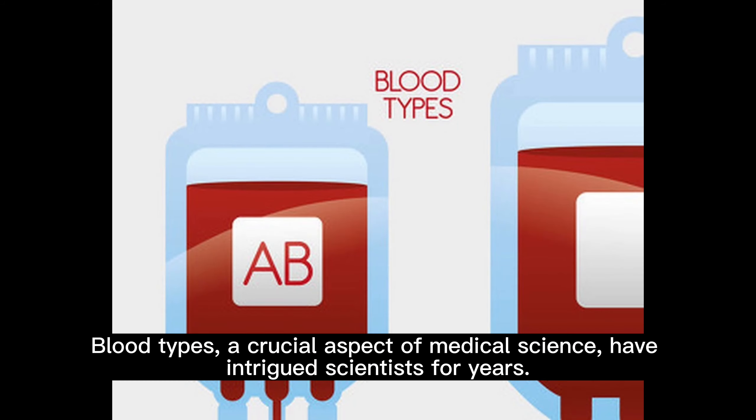Blood types, a crucial aspect of medical science, have intrigued scientists for years. But why do we have different blood types? Let's delve into the science behind it. Blood type is determined by the presence or absence of specific antigens and antibodies in the blood. These are proteins that can trigger an immune response if they are foreign to the body.